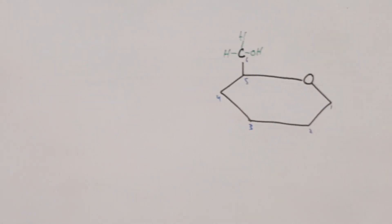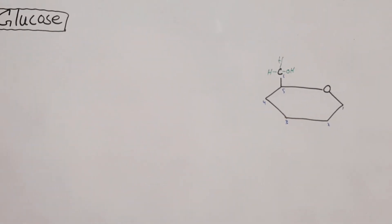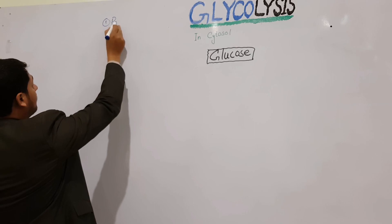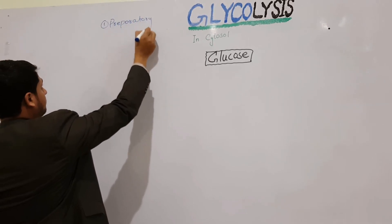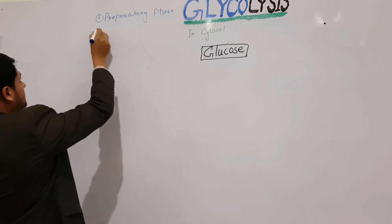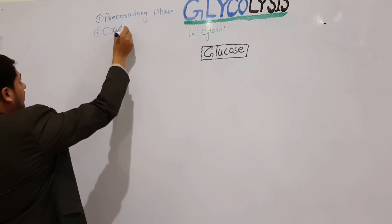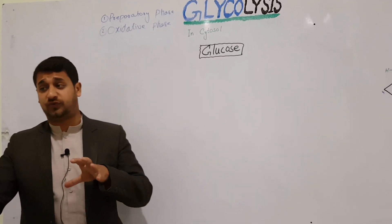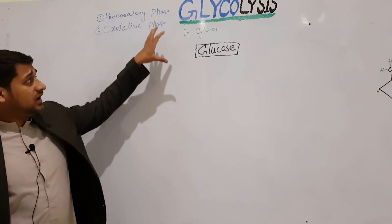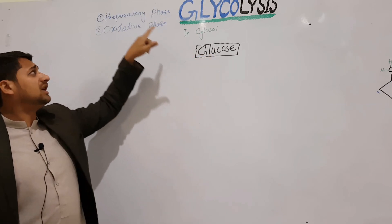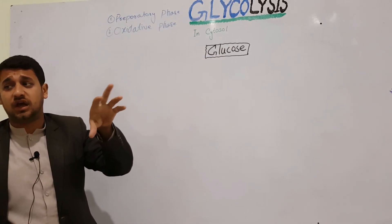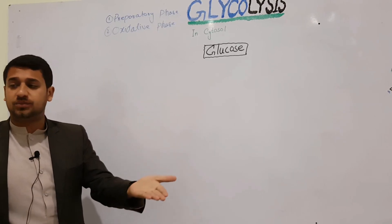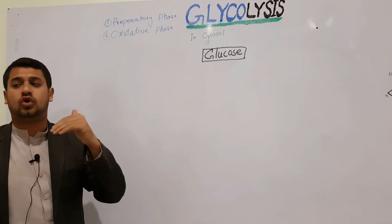The process of glycolysis completes in two different steps. Step one is called the preparatory phase — also called the investment phase — because two ATPs will be invested here. Step two is called the oxidative phase, where two more ATPs are needed.